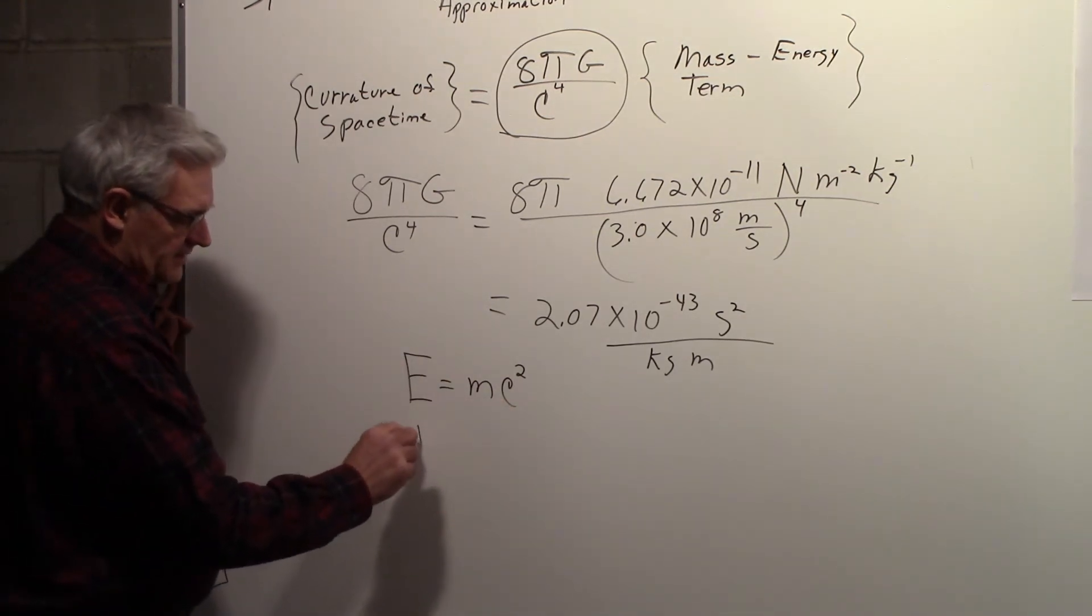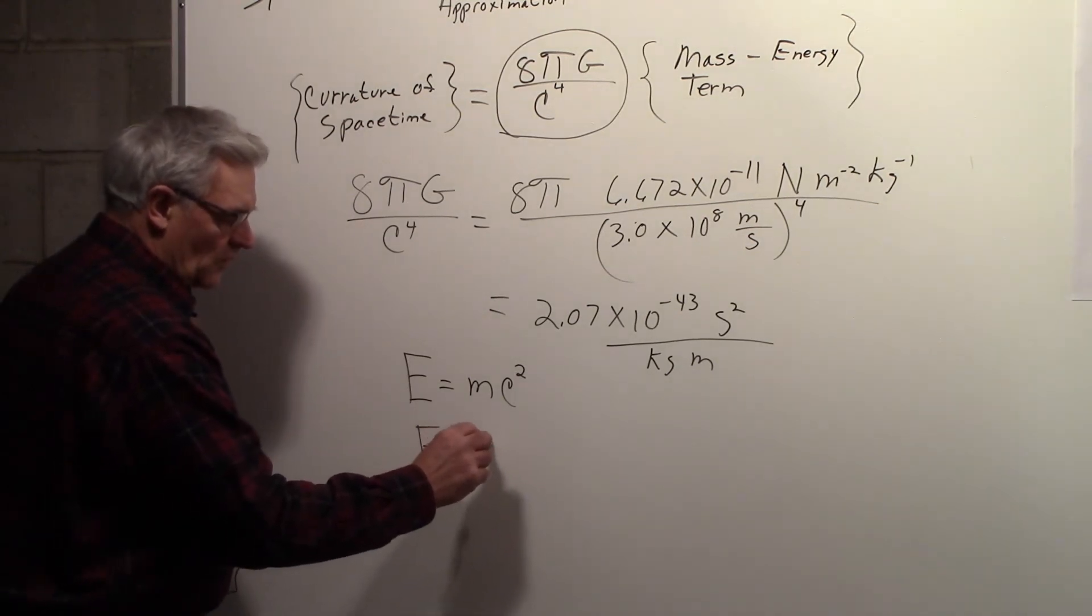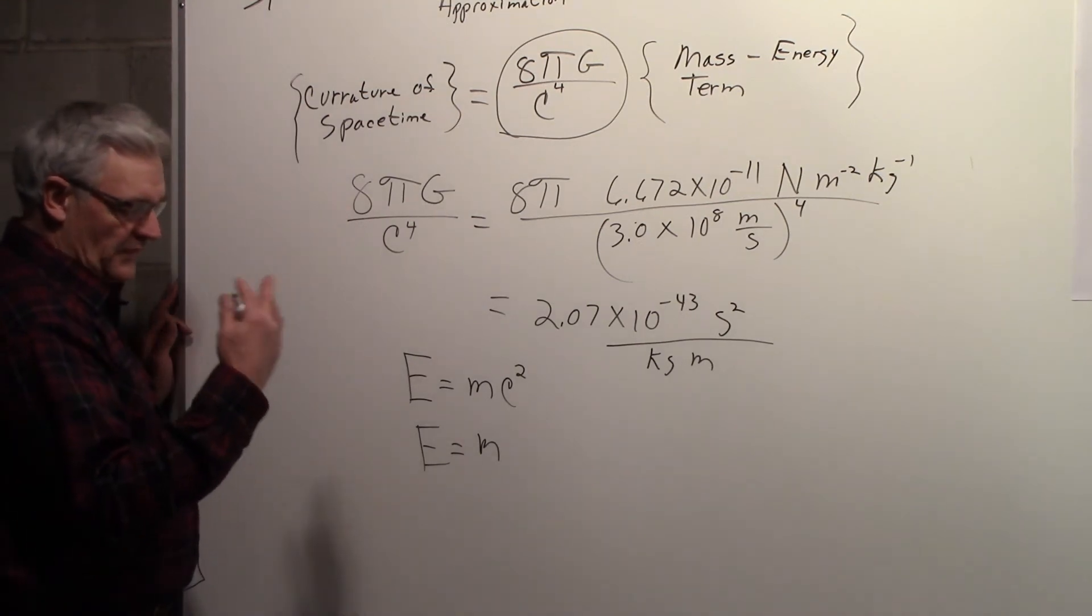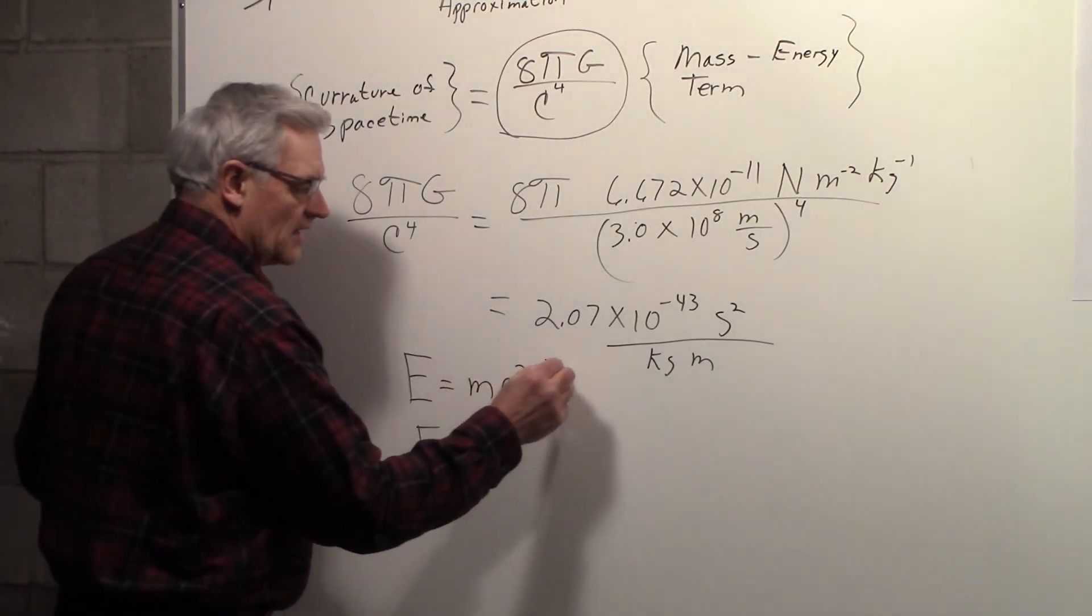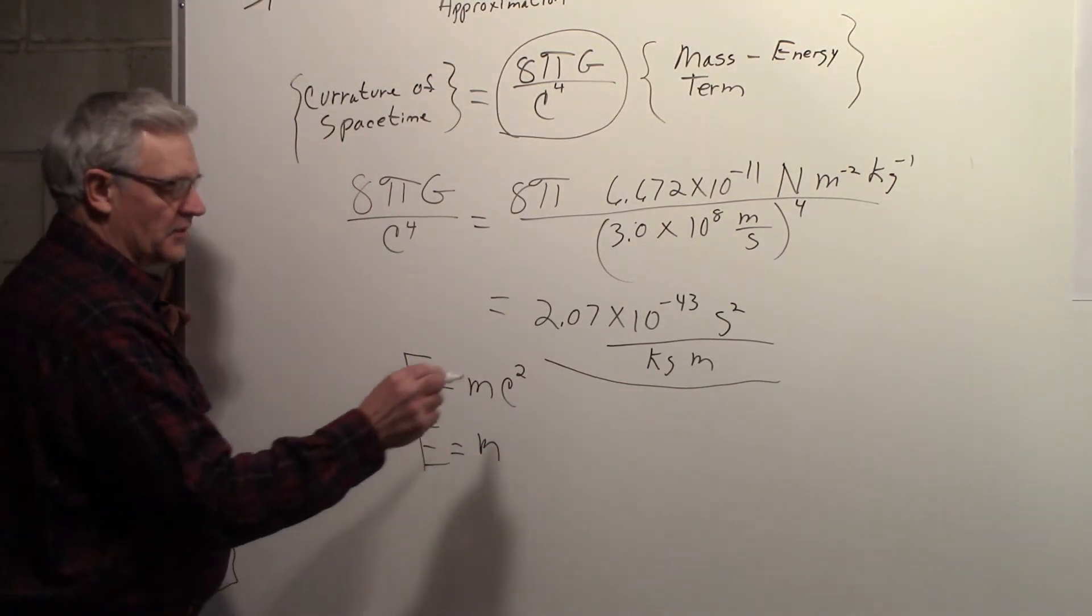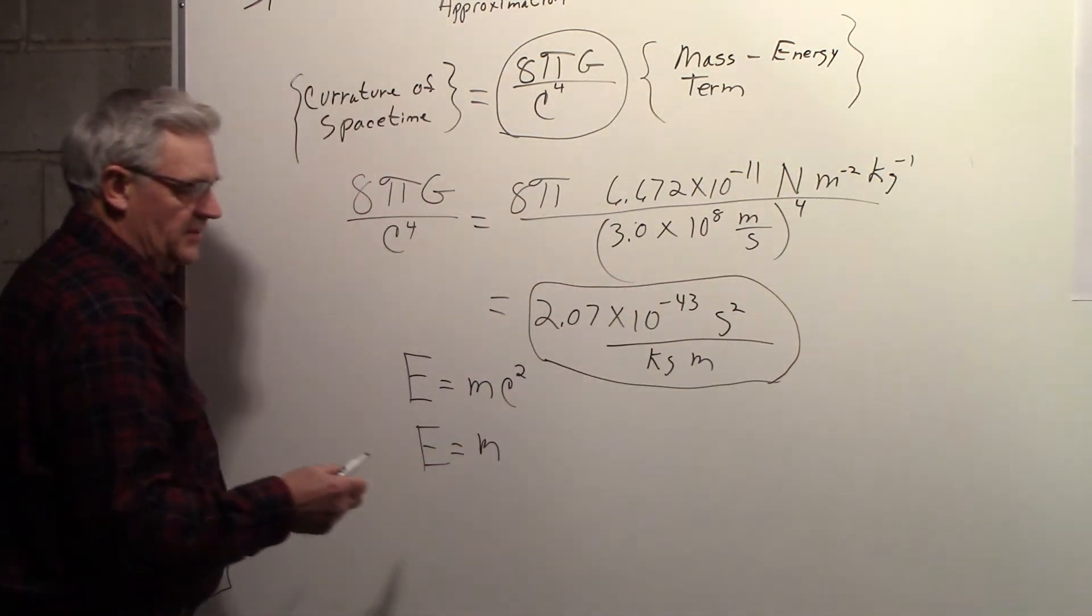But you could also have a system of units where c is 1, and the equation would look like that. So, with that in mind, we came up with this number, and we have to think of that rather cautiously, because of the way we can change units around.